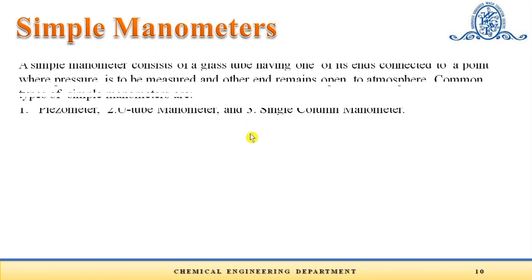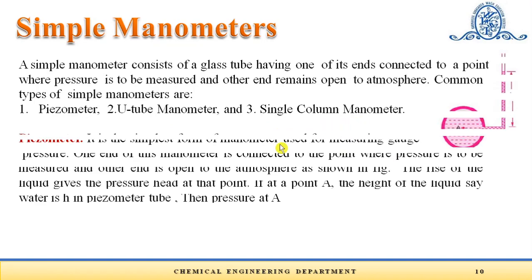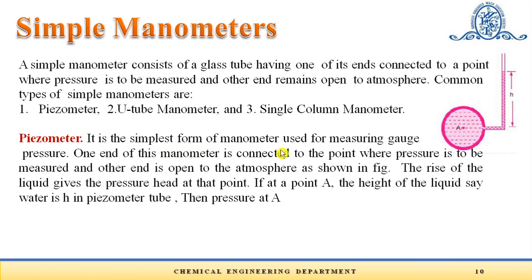The first type is the simple manometer. It consists of a glass tube having one end connected to a point where pressure is to be measured and the other end open to atmosphere. Common types are the piezometer, U-tube manometer, and single column manometer. The piezometer is the simplest form, used for measuring gauge pressure. One end is connected to the measurement point, the other is open to atmosphere. The rise in liquid gives the pressure at that point. If the height of liquid in the piezometric tube above point A is h, then pressure at A is given by P_A = ρgh.